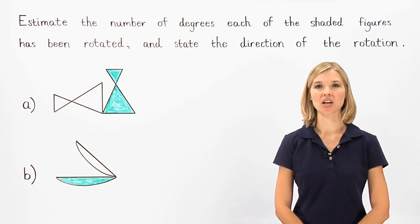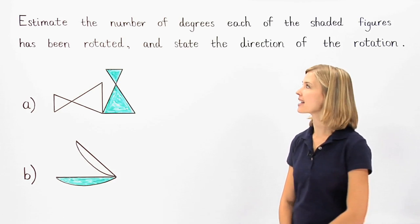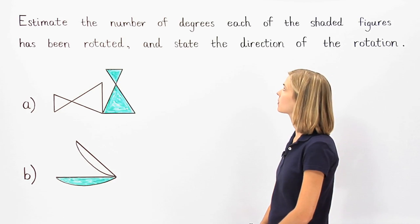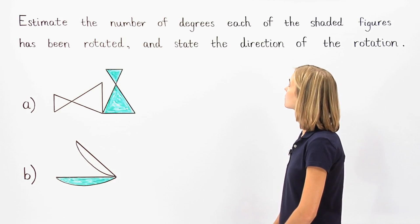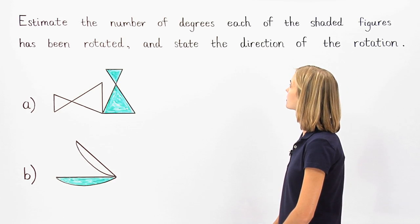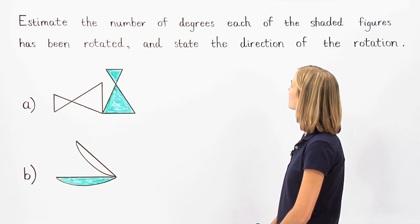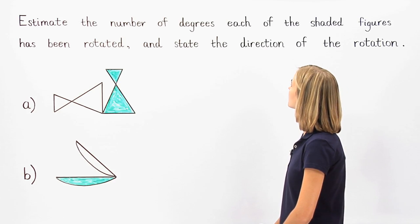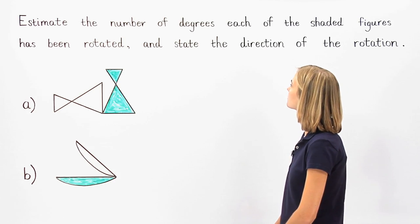In this example, we're asked to estimate the number of degrees each of the shaded figures has been rotated and state the direction of the rotation.